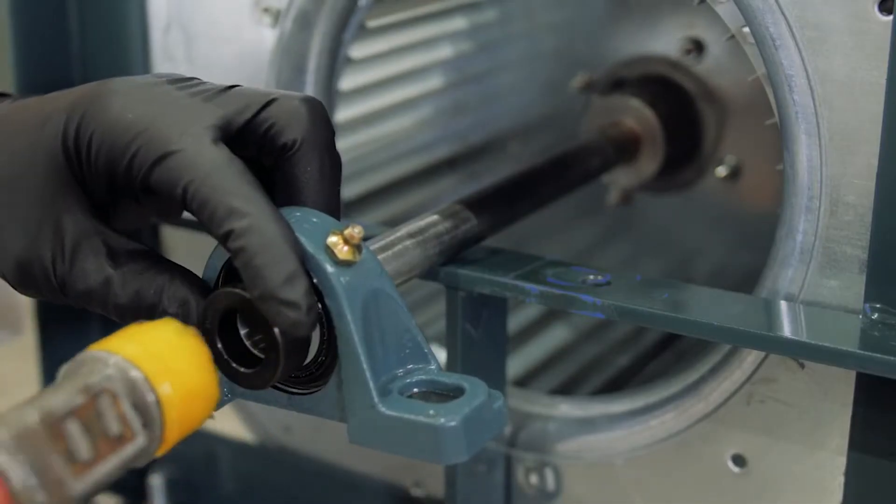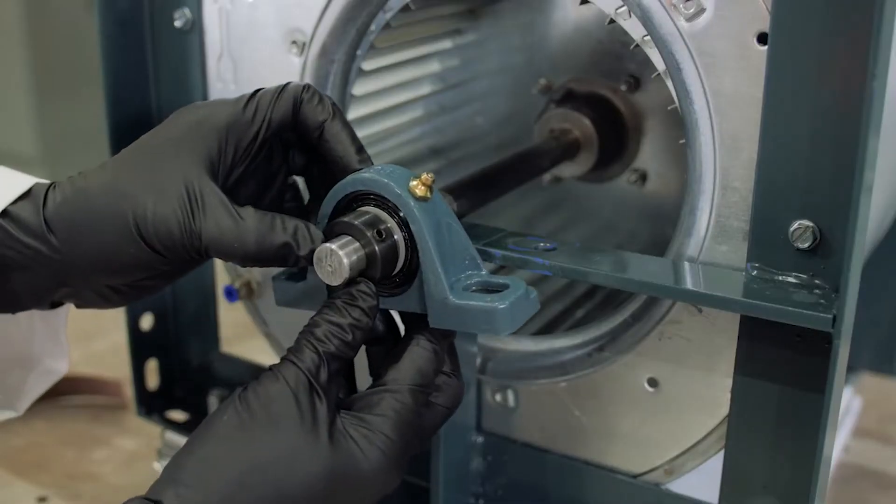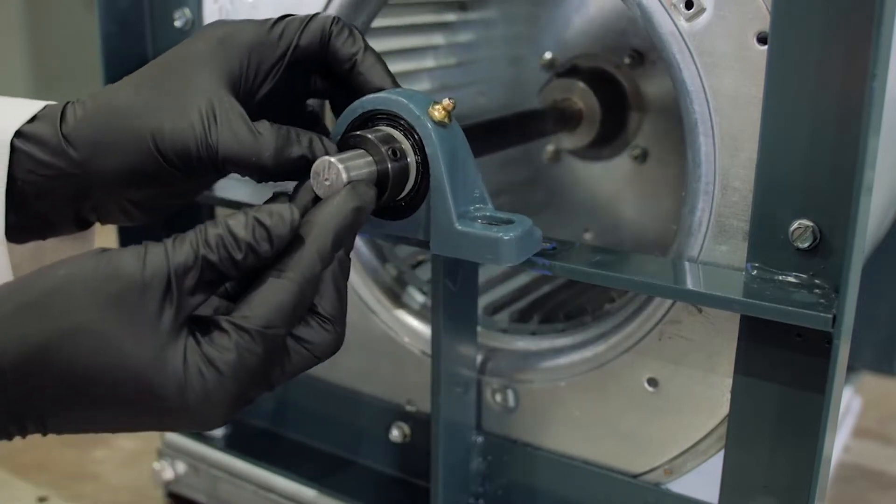Proper alignment is important to maximize the life of the bearing. Dodge ball bearings are rated for plus or minus two degrees of static misalignment.